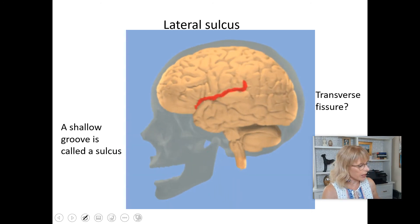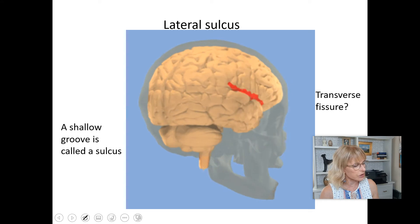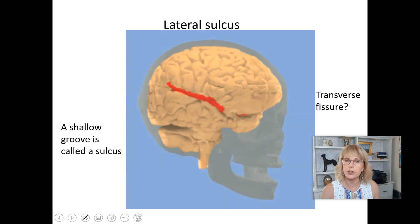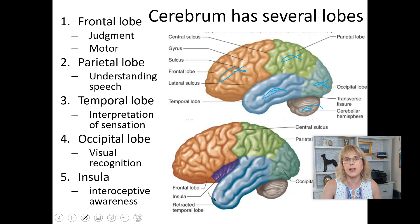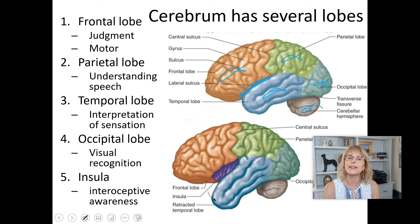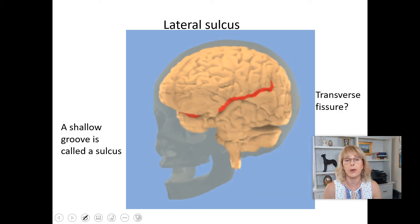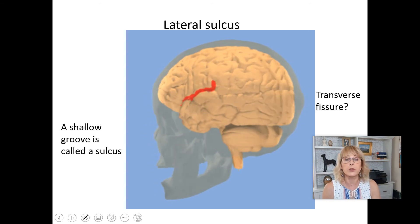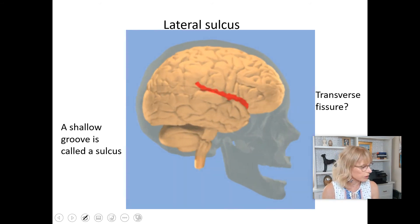The ones you do have to know are: the longitudinal fissure, the lateral sulcus, and the transverse fissure. The lateral sulcus — wouldn't you like it to be that big groove on the side right there? And it is. That's the lateral sulcus. It's that big groove between the frontal lobe and the temporal lobe. I could ask it that way: what's the name of the groove between the frontal lobe and the temporal lobe? It's the lateral sulcus.